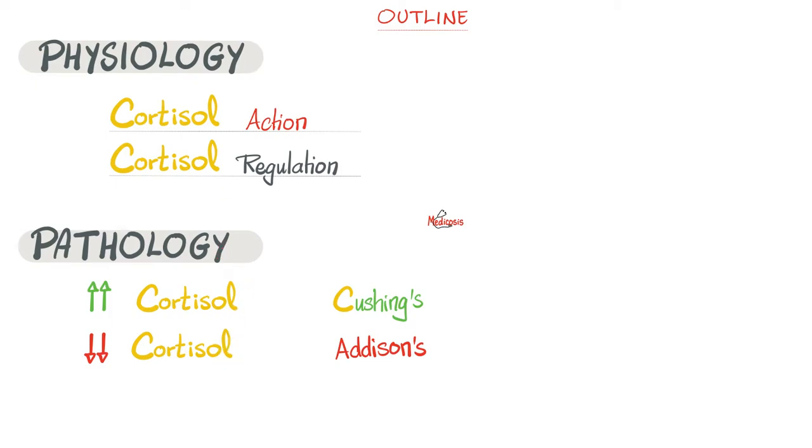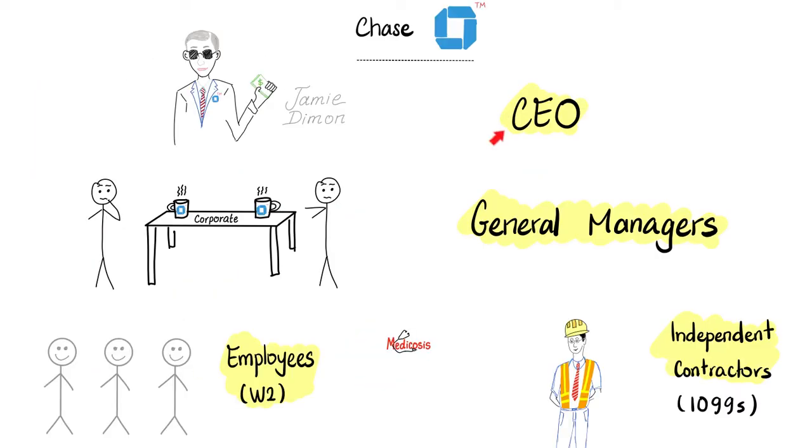When you have too much cortisol, this could be Cushing syndrome. When you have too little, this could be Addison disease. First, the physiology.